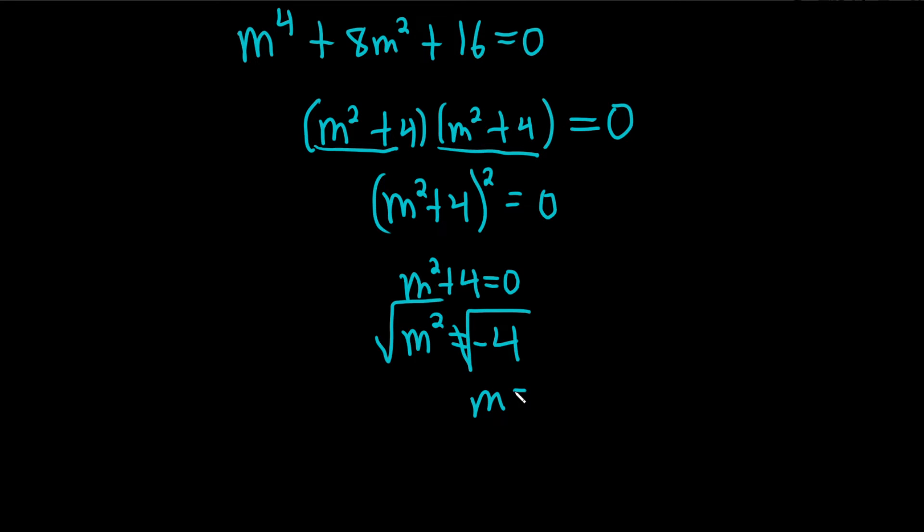So you end up with m equals plus or minus 2i. So we have complex conjugate solutions. You can think of this as zero plus or minus 2i. And so our answer has the form alpha plus or minus beta i. So alpha here is 0 and beta is 2.